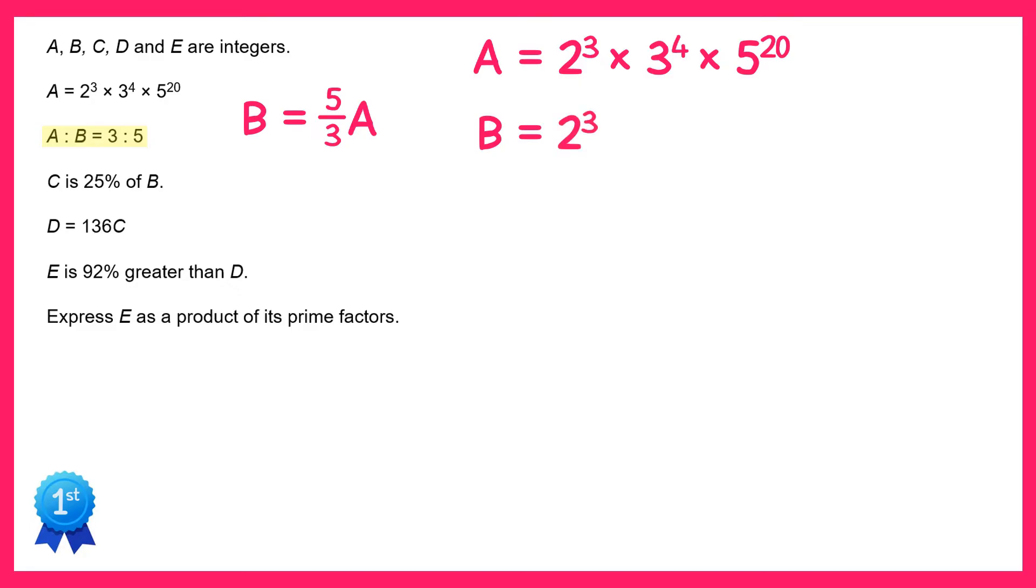And if we divide it by 3 the power of 3 will go down, so instead of 3 to the 4, 3 to the 3. And if we multiply by 5 the power of 5 will go up by 1, so instead of 20, 21.